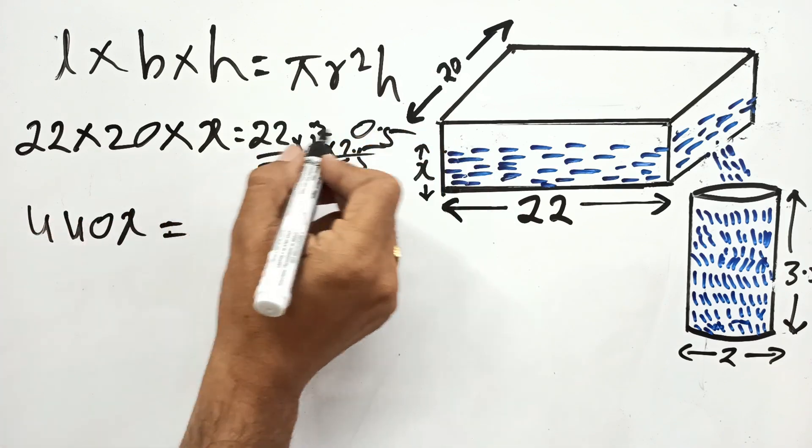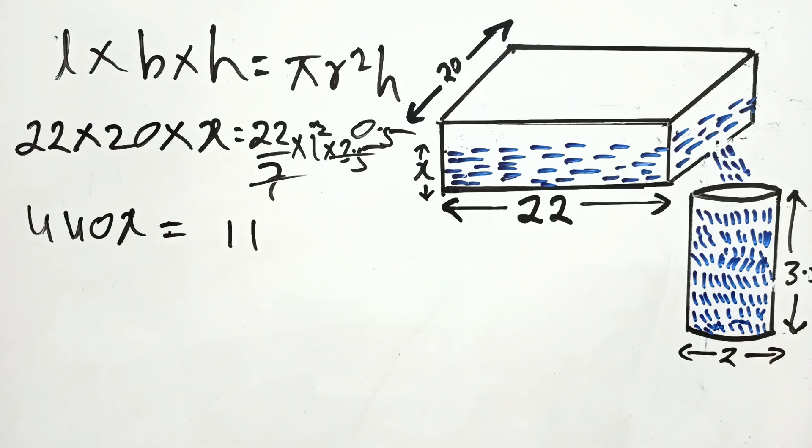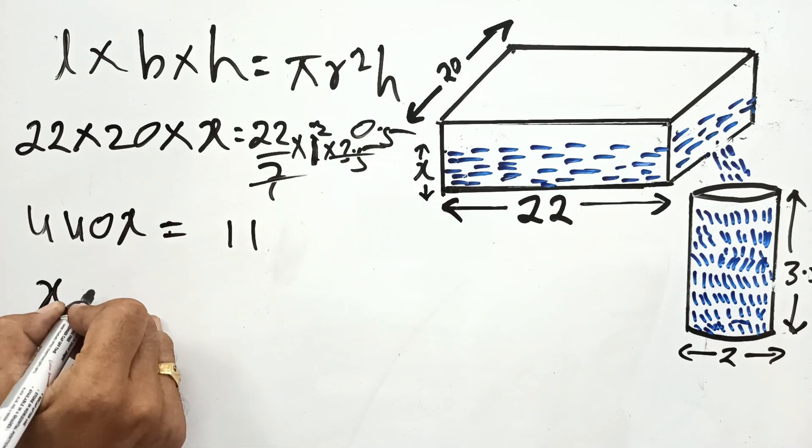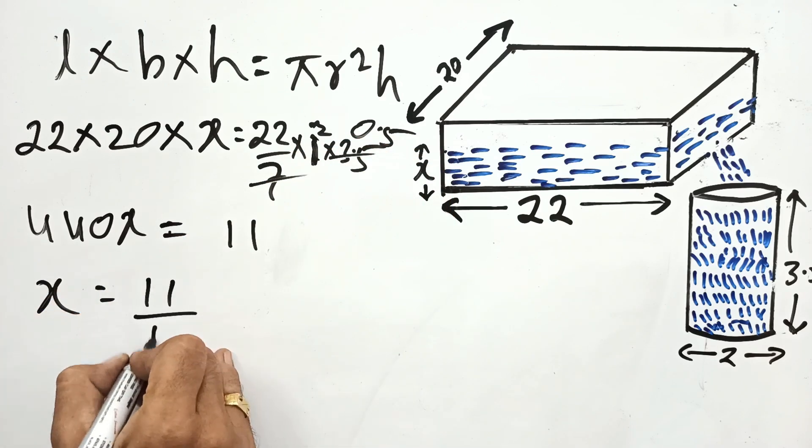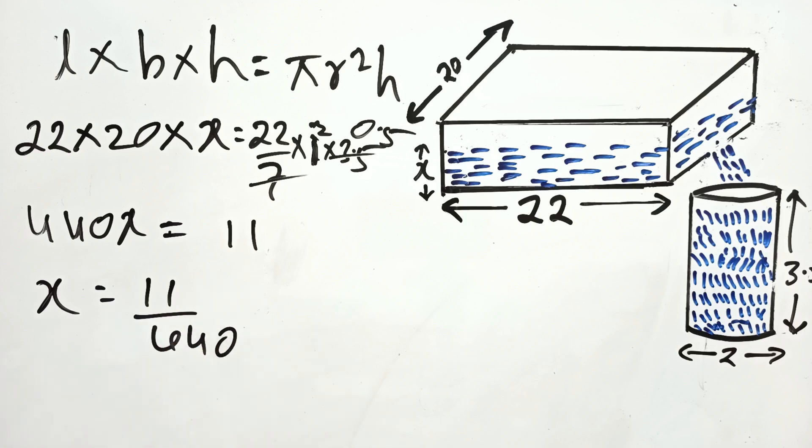So 22 into 0.5 is 11, 1 squared is only 1, so X is equal to 11 upon 440. This is in meters, so we need to convert to centimeters.